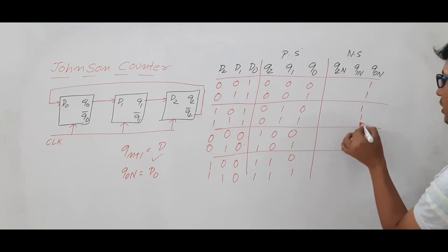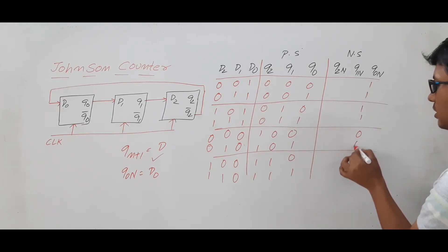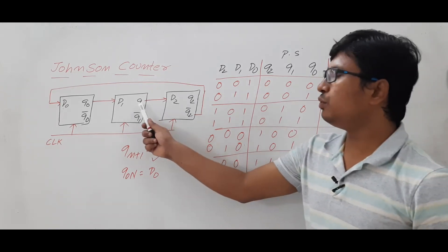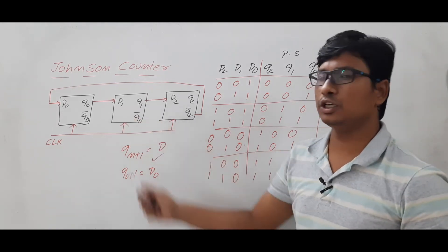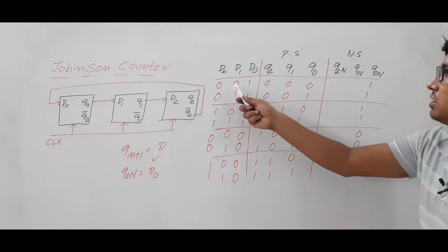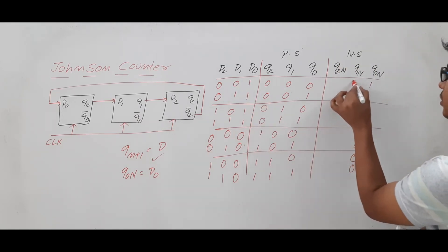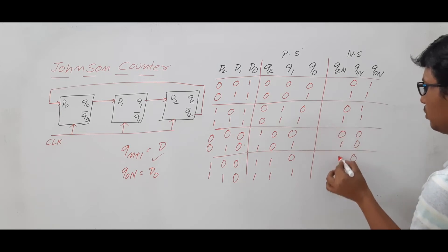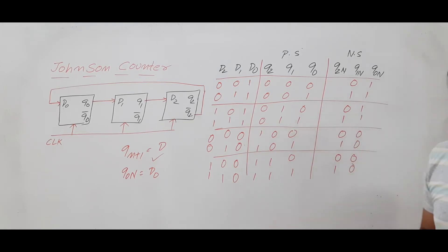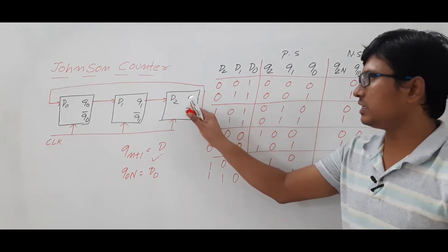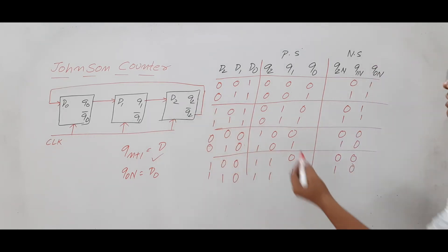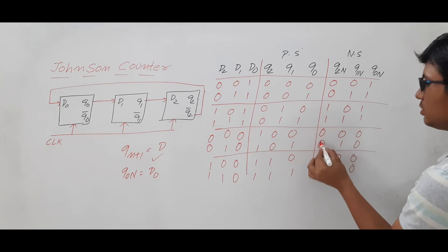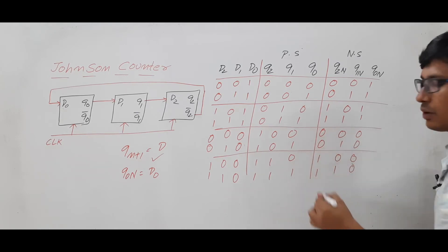Similarly, Q1N = D1, giving values: 0, 1, 0, 1, 0, 1, 0, 1. And Q2N = D2, giving values: 0, 0, 1, 1, 0, 0, 1, 1. So we have obtained the next state of each flip-flop.